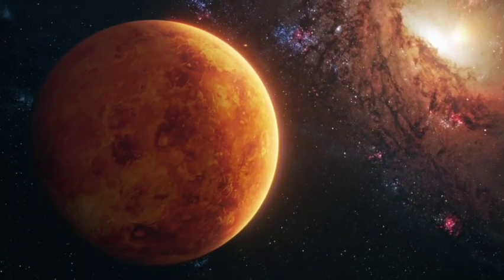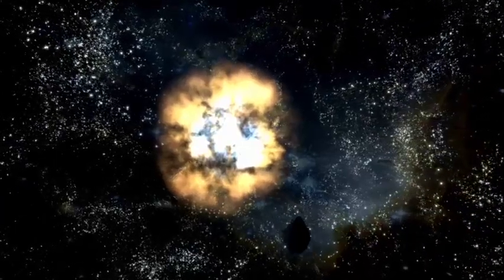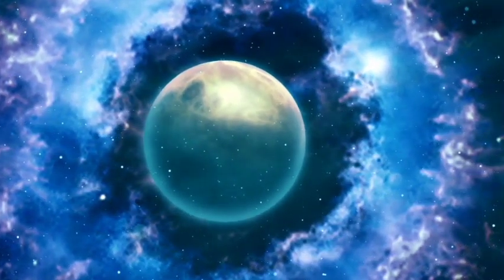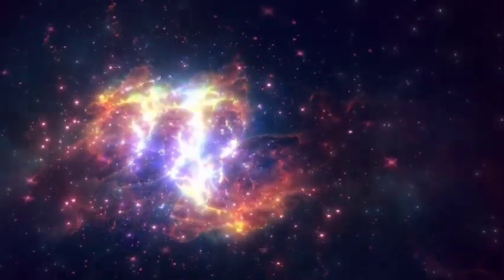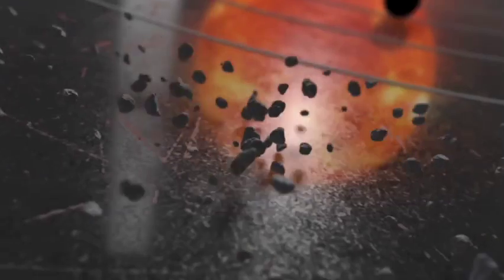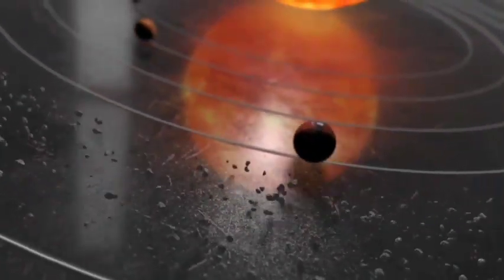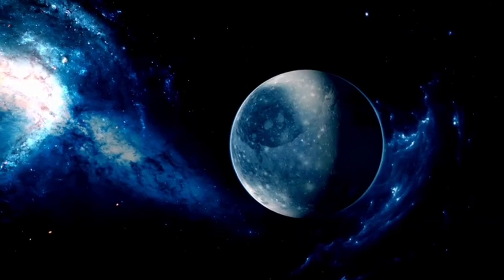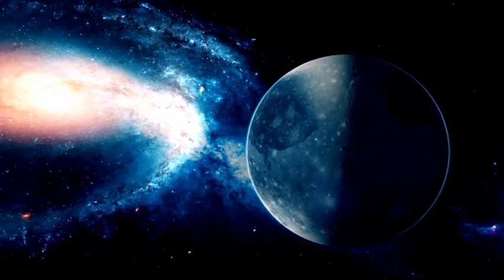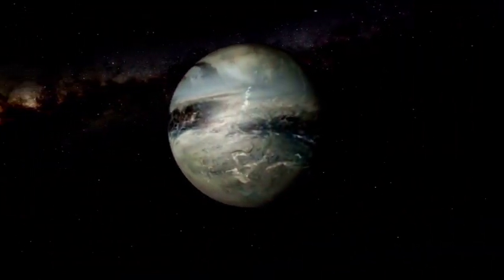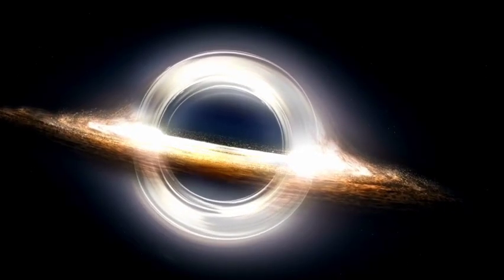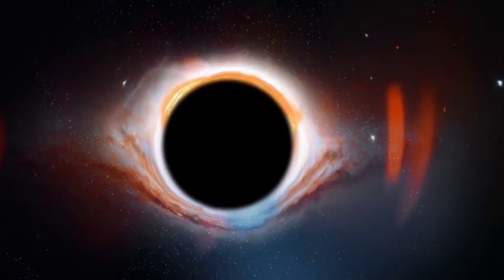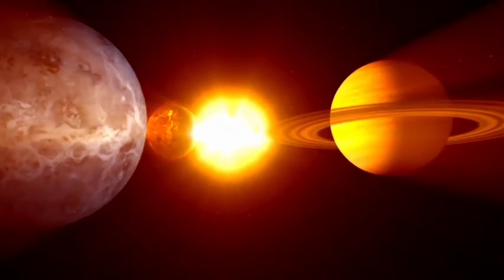What will happen when Betelgeuse goes supernova? When Betelgeuse finally reaches the end of its life, its core will collapse under the immense gravitational force. This will trigger a Type II supernova, an event that occurs when a massive star exhausts its nuclear fuel. Betelgeuse will no longer be able to sustain nuclear fusion, causing its core to collapse in a fraction of a second. The collapse will create a dense, incredibly hot core while the outer layers explode outward. The explosion will release an immense amount of energy, possibly as much as the sun emits over its entire lifetime in just a few seconds. This burst of energy will briefly make Betelgeuse one of the brightest objects in the night sky, potentially visible even during the daytime for weeks or months. The explosion will scatter heavy elements like iron, nickel, and oxygen into space, contributing to the cosmic cycle of star formation and providing raw materials for future stars, planets, and even the building blocks of life.